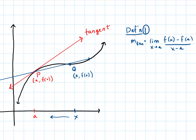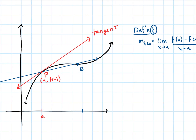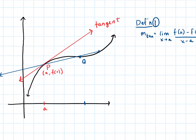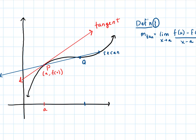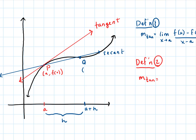Now let's change things up a little bit. Rather than calling the second point just generically x, we're going to talk about the distance between P and Q on the x-axis. We're going to call this H. Therefore, this point is going to be a plus H. So Q, rather than being x, f of x, becomes a plus H for the x value, and f of a plus H for the y value.